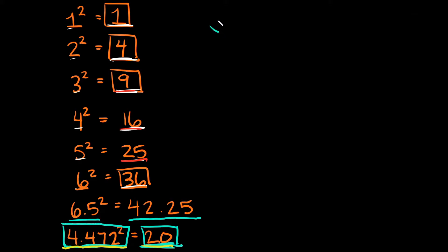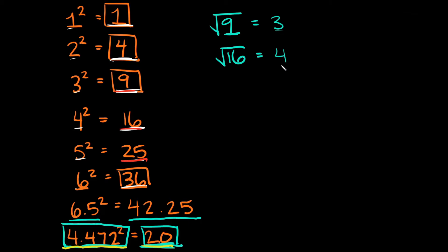For example, if I took the square root of 9, the square root of 9 is equal to 3. Since my answer is a whole number, that means the number inside the radical is a perfect square. What if we took the square root of 16? That would be 4 — since we got a whole number, the number inside is a perfect square. Or if we took the square root of 25, the answer would be 5, so since our answer is a whole number, 25 is a perfect square.